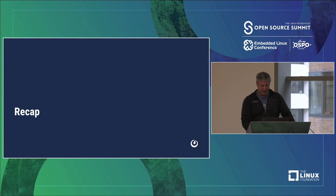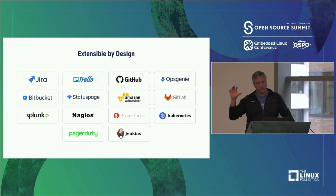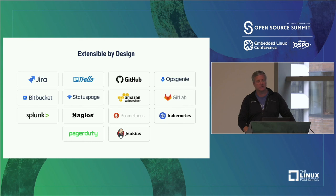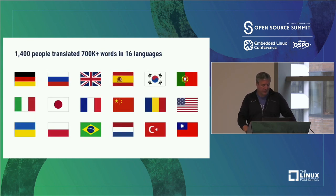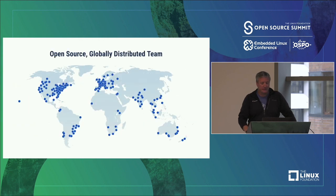Let me recap. There's just a small sampling of the different integrations we have, ranging from webhooks to apps to full custom plugins. Our Jira and GitHub plugins are extremely rich and interactive — our Jira plugin is actually bidirectional, so when data is updated in Jira it gets updated in Mattermost, and you can update the Jira ticket in Mattermost and it gets updated in Jira. We have some really powerful ones and some that are just plain simple webhooks. A lot of our plugins are also internationalized — we have 1,400 people who have translated 700,000 words across 16 different languages.